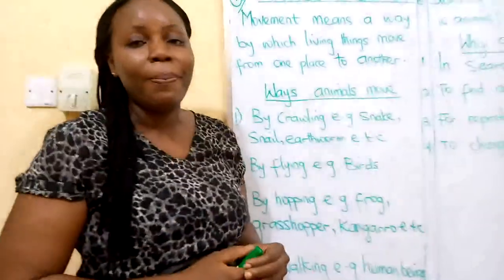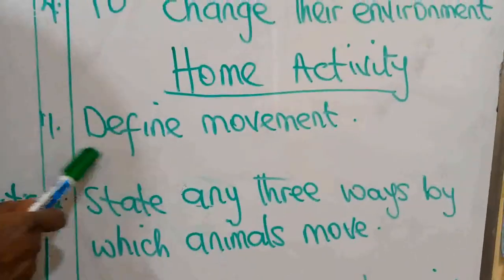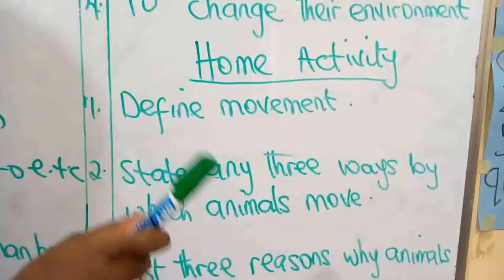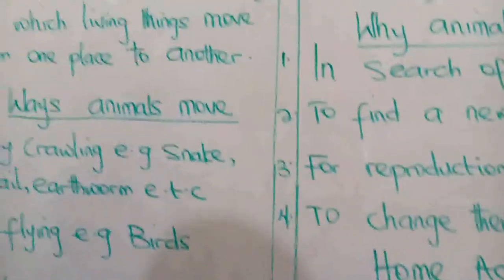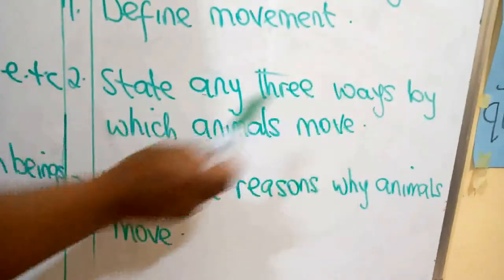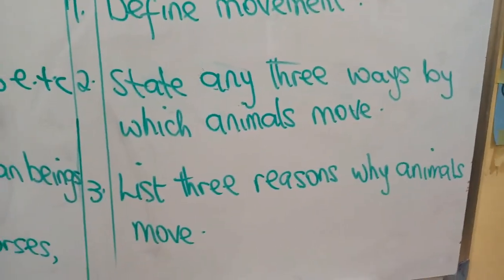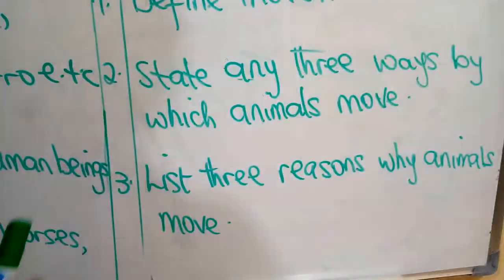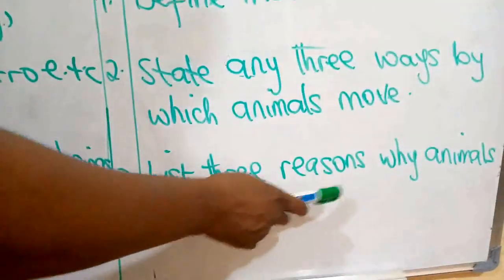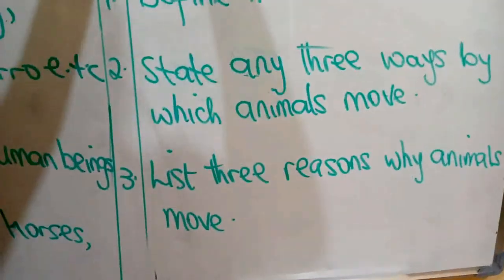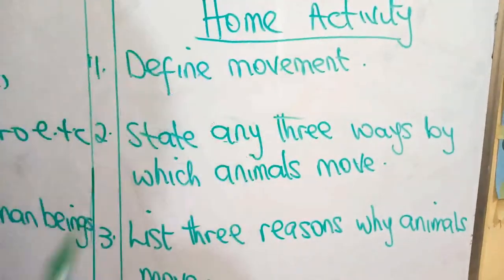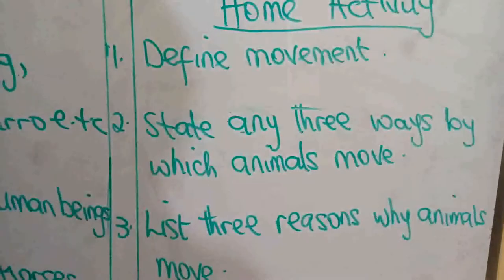Now it's time for your own activity. Here is your activity on the board. Number one: define movement. Movement means a way by which living things move from one place to another. Number two: state any three ways by which animals move — by crawling, by flying, by hopping, by walking, by galloping, by swimming. Number three: list three reasons why animals move — in search of food, to find a new home, for reproduction, to change their environment. Tell me any three reasons why animals move.